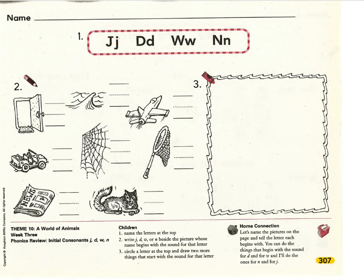Now that we've reviewed our letters, let's begin practicing our skill today. I'm going to name a picture. I want you to think of what sound you hear at the beginning of the word. We'll write the uppercase and lowercase form of that letter on the handwriting line right next to it. Let's start at the first picture.